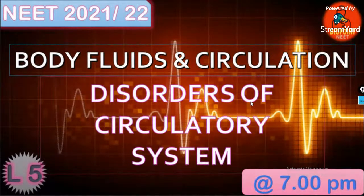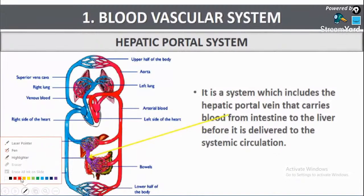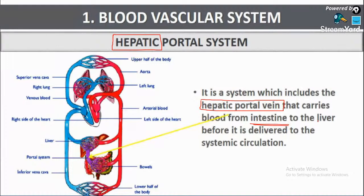So, what is the hepatic portal system? It is a system which includes a hepatic portal vein that carries blood from the intestine to the liver. Hepatic refers to something related to the liver.